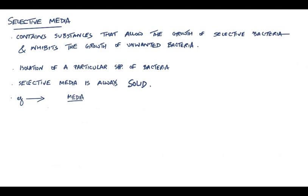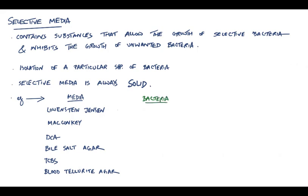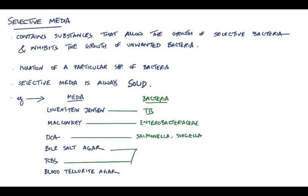The most commonly used are Loewenstein-Jensen media, MacConkey's agar media, DCA or deoxycholate citrate agar media, bile salt agar, TCBS agar and blood tellurite agar media. Each of these media are used to culture a specific type of bacteria such as Loewenstein-Jensen for tuberculosis, MacConkey for Enterobacteriaceae as they contain bile salt they only let Enterobacteriaceae grow, then DCA for Salmonella and Shigella, bile salt and TCBS agar for Vibrio cholerae and blood tellurite agar for Corynebacterium diphtheriae. Remember, in Loewenstein-Jensen media, malachite green is used as the selective substance. It is very high yield.